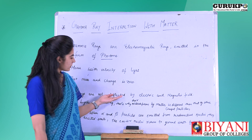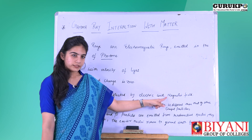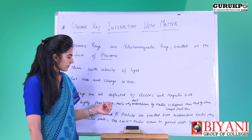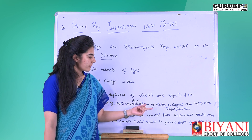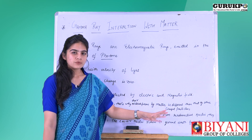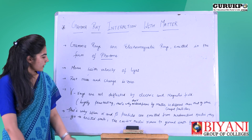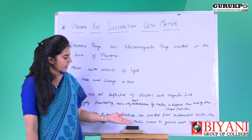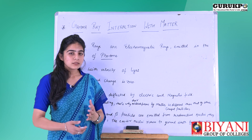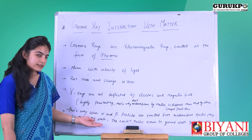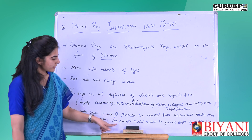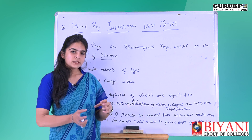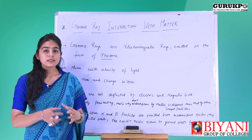Gamma rays are not deflected by electric and magnetic fields. We can say that gamma rays are highly penetrating, and that is why their absorption by matter is different than that of other charged particles. When alpha and beta particles are emitted from radioactive nuclei, the nuclei go to an excited state, and when the nuclei return to the ground state, they emit gamma rays.